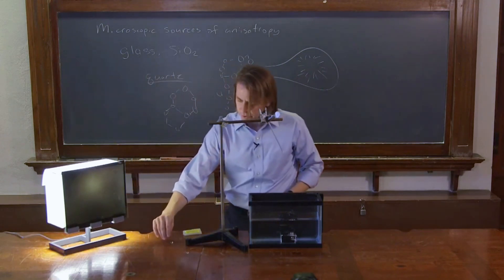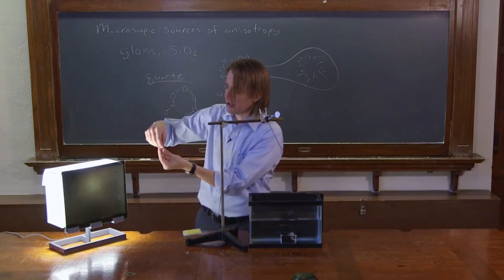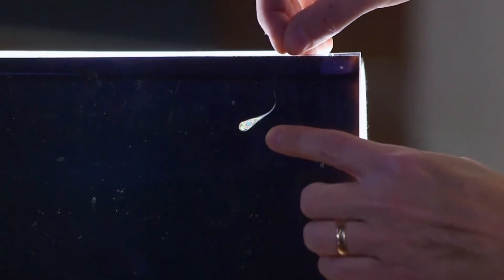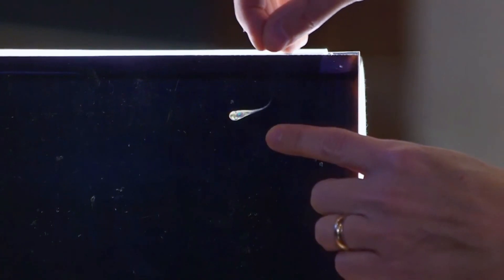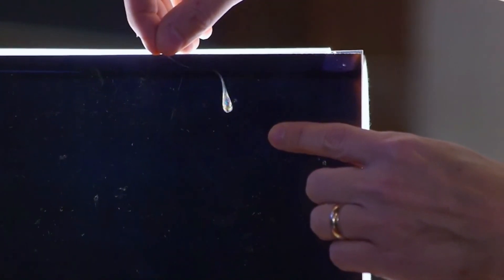And just for fun, we can also turn the drop to make sure that the colors change. That's another sign that it's anisotropy and not some weird reflection. You can see the pattern of colors shifts as I turn it.